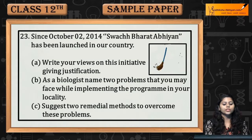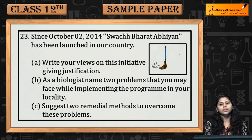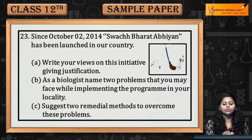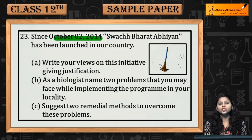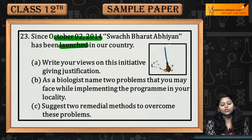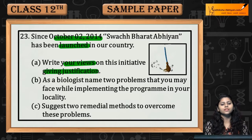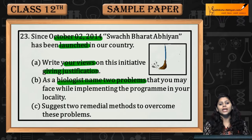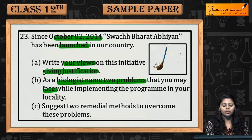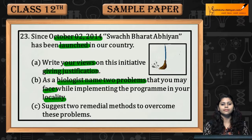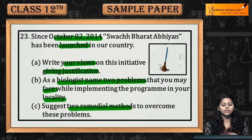Section D, Question 23. Since October 2, 2014, Swachh Bharat Abhiyan has been launched in our country. Write your views on this initiative giving justification. As a biologist, name two problems that you may face while implementing the program in your locality. Suggest two remedial methods to overcome these problems.